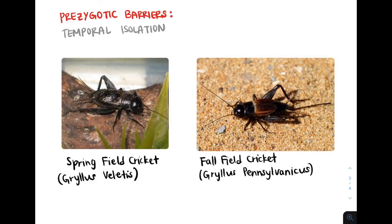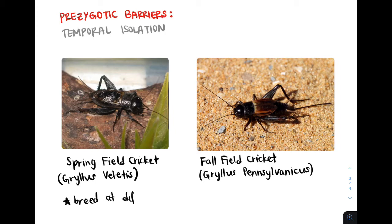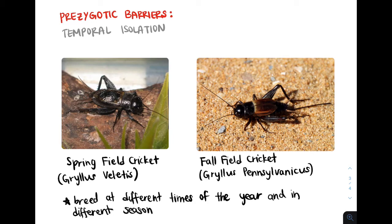Now let's look at temporal isolation. We have the Springfield cricket and the Fallfield cricket. Just by their names, we can tell that the Springfield cricket breeds during the springtime, whereas the Fallfield cricket is reproductively active in the fall. Both species breed during different times of the year, with different seasons when they're reproductively active. The word 'temporal' has the root 'temp,' which relates to time — these species are unable to breed because they breed during different times of the day, different seasons, or different years.